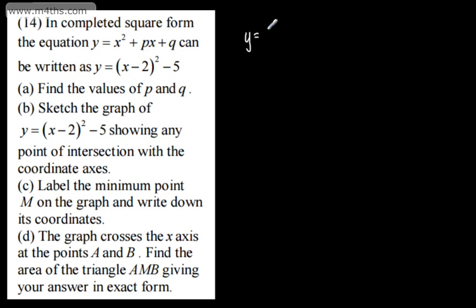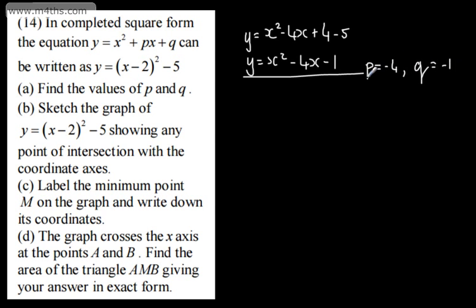So expanding the square bracket, x² - 4x + 4 - 5, that's going to give us y = x² - 4x - 1. So we can say that p is going to be equal to -4, and q is going to be equal to -1. So that part is done.